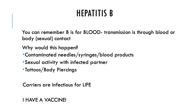Hepatitis B is transmitted through the blood or body fluids, including sexual contact. This happens in people using contaminated needles, syringes, or blood products, those having sexual activity with an infected person, or getting tattoos and body piercings with improperly cleaned devices. People with hepatitis B can be infectious for life if they're a carrier. The good news is there is a vaccine.